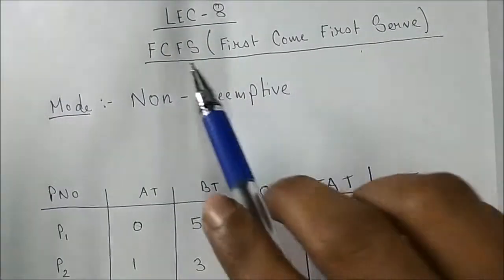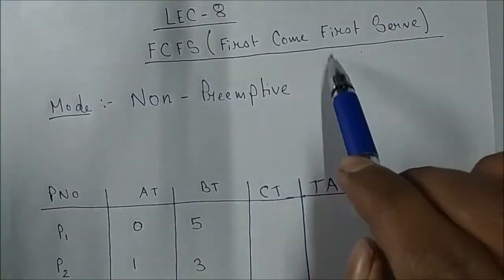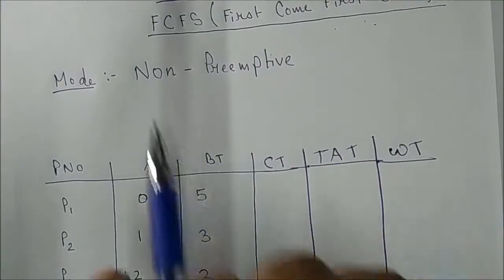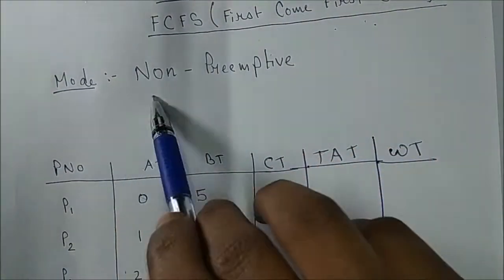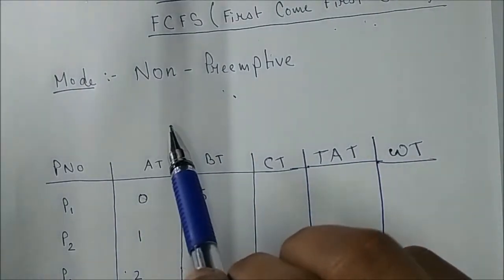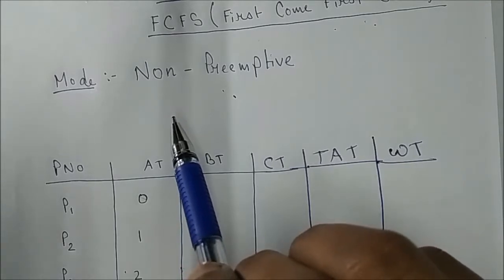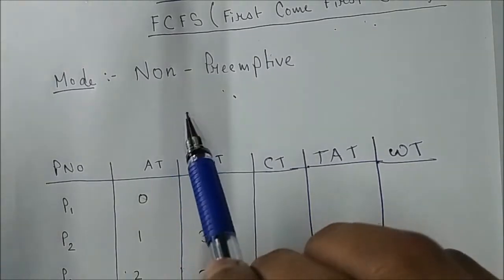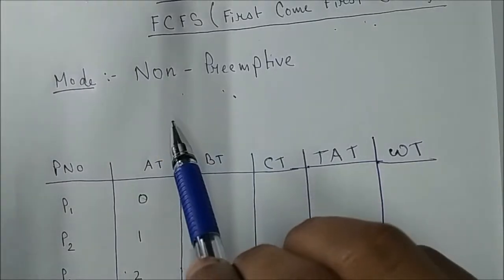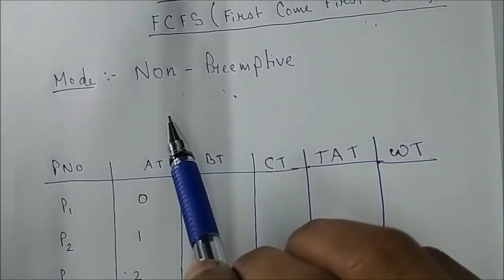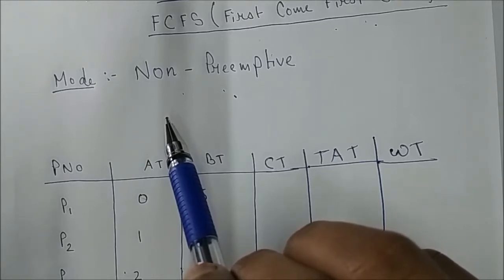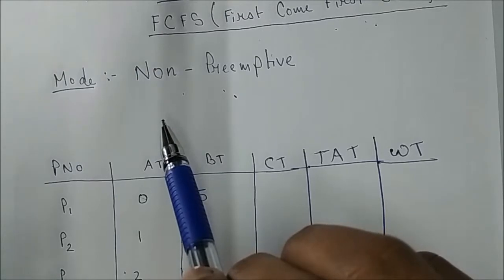Hello everyone, today we will see FCFS — First Come First Serve CPU scheduling algorithm. It is non-preemptive. Preemption means we can stop the process forcefully, and non-preemption means the process will run its full burst time until it finishes.